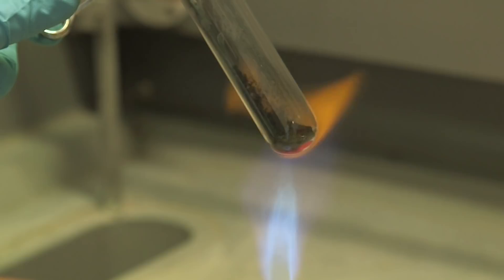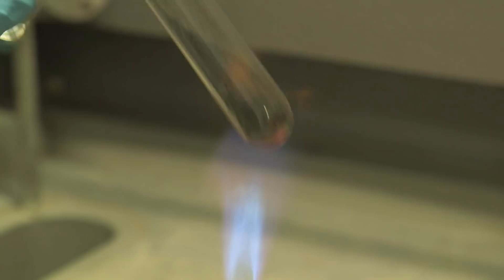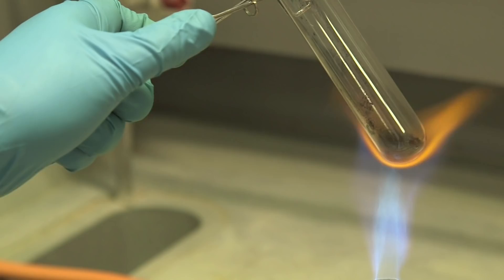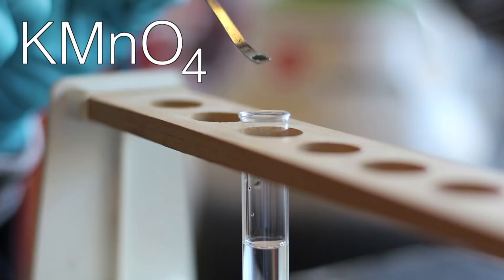The really famous compound of manganese is potassium permanganate, which is a purple color. Potassium permanganate is KMnO4. In fact, in the MnO4 minus, the permanganate ion, manganese has no D electrons at all.